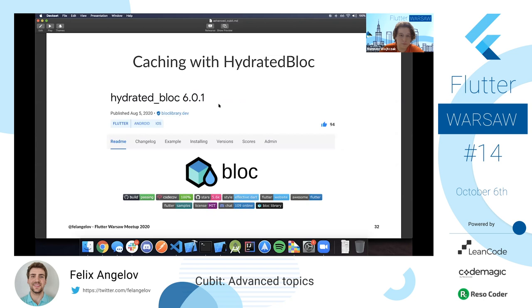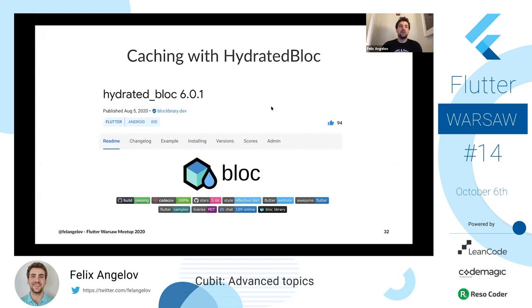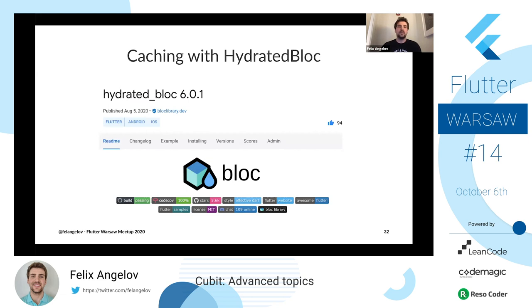The rest of the meetup I'm going to talk about two more packages — Hydrated Bloc and Replay Bloc. Hydrated Bloc allows you to cache the state of your cubit and block automatically. On every state change it gets cached, and whenever that cubit or block is recreated it picks up where it left off. With a counter app, if you increment to 10 and kill the app, it would remember where it left off — great for bad connections where you want to show old cached data or basic offline functionality.